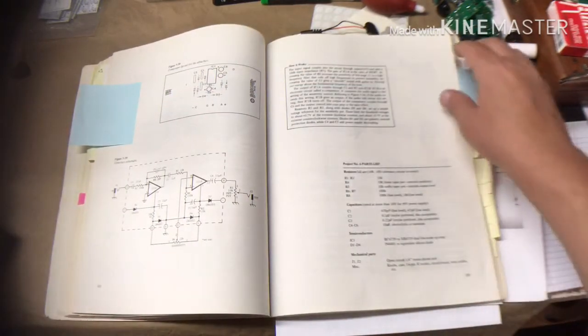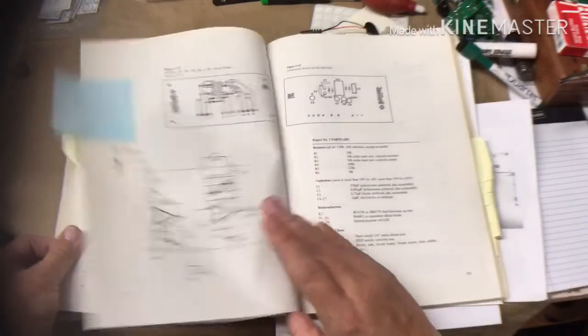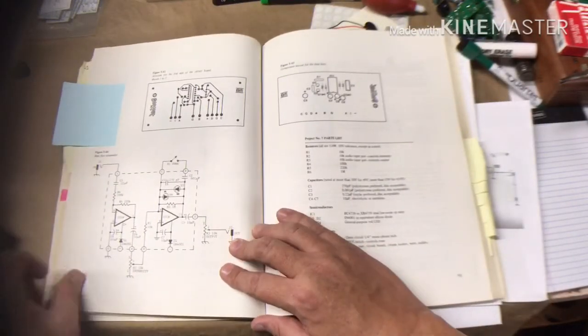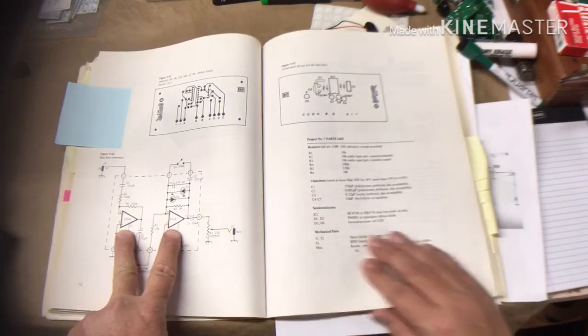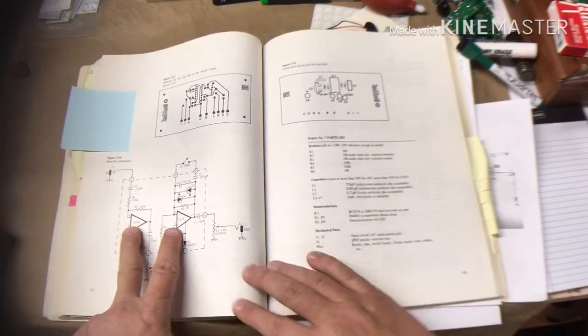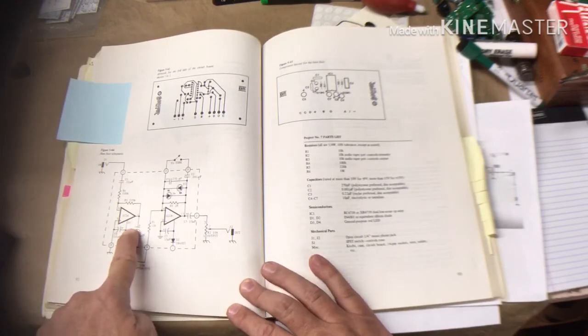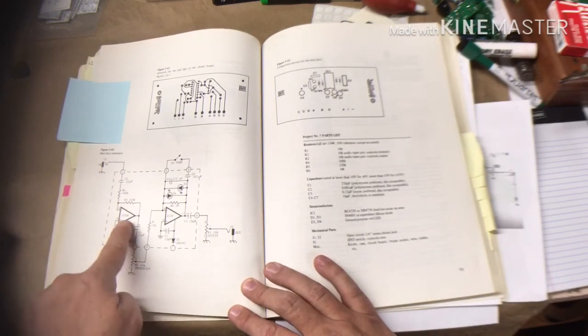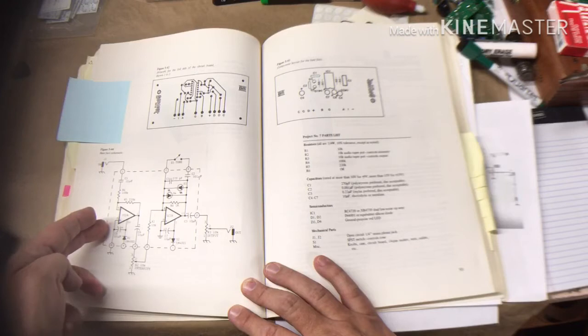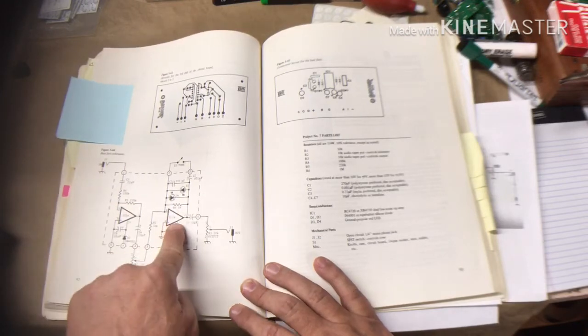Now over here for the base fuzz, we still have a dual op-amp circuit. As a matter of fact, this first amplification stage looks nearly identical to project six, and the second amplifier stage looks nearly identical to project one.